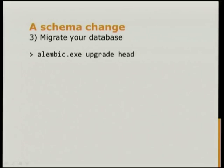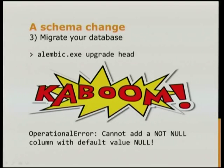All we need to do is run the upgrade command — specifying 'head' upgrades to the latest revision. And you get kaboom! This doesn't happen in the tutorial, but it does happen in real life. The data part of the migration is quite hard to document because it's different in every situation. So what do we do? This is reality, but it's not in the documentation.